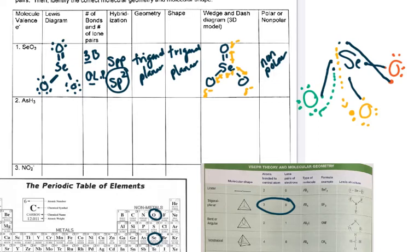I'm going to do one more — number two — and then I'll do an expanded octet one for you. Arsenic is in group 15 on the periodic table, which means it has five valence electrons. Hydrogen is in group 1 and has one valence electron. I'm going to draw single bonds, bonding my one electron to each of my hydrogens.